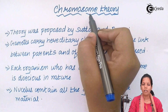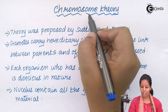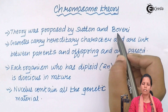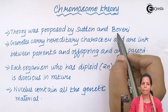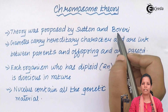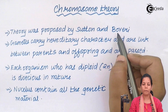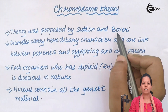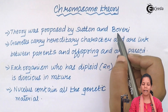The chromosomal theory given by Sutton and Boveri was the theory that laid the basis of genetics today. They clearly stated that every organism that is dioecious, or simply diploid, will have the diploid number of chromosomes — that is, they will have 46 number of chromosomes inside their somatic cells.